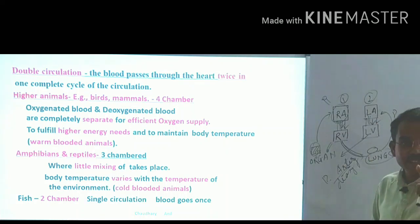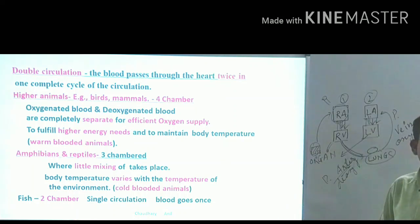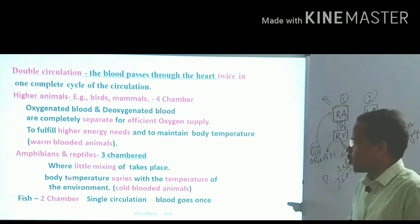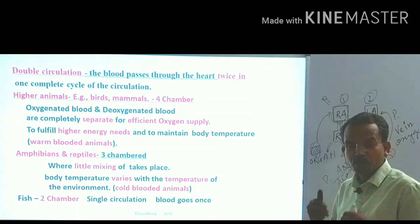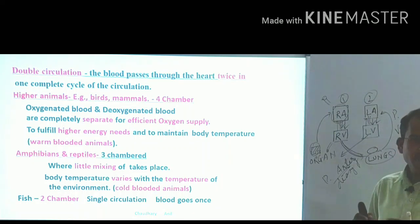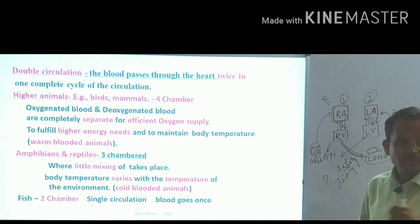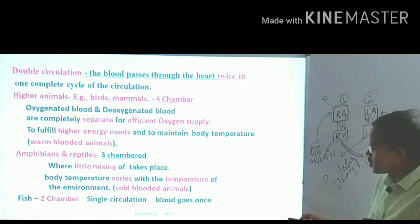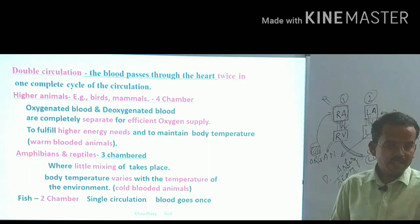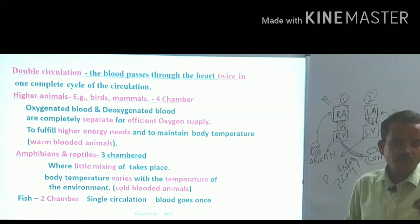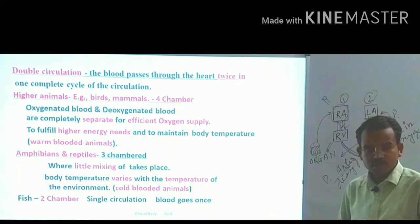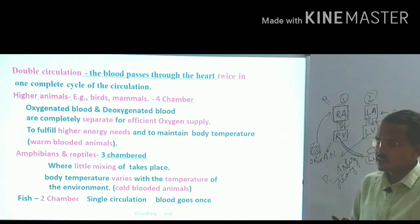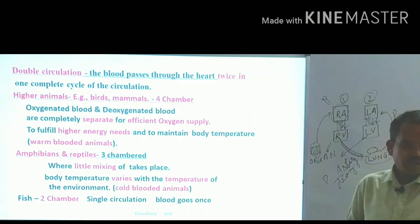In amphibians and reptiles, there are only three chambers, where a little mixing of oxygenated and deoxygenated blood takes place. Our body maintains approximately 37-38 degrees Celsius regardless of season — that is why we are warm-blooded. In contrast, reptiles and amphibians cannot maintain a constant body temperature; it varies with the environment. These are called cold-blooded animals, while birds and mammals are warm-blooded.